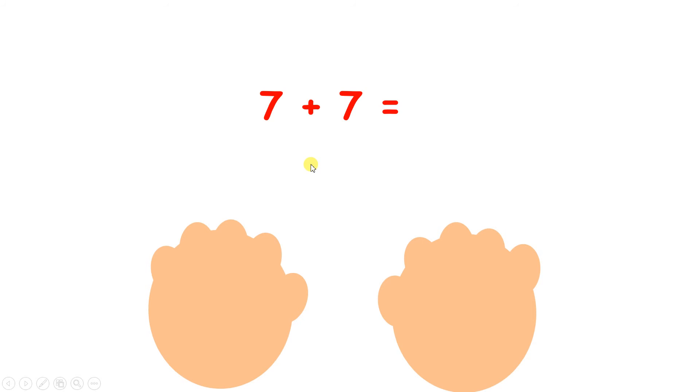So again really important we say 7 before we put any fingers up. And then we count on 8, 9, 10, 11, 12, 13, 14. And I'm going to stop at 14. Why am I going to stop at 14? Well you can see that I'm now holding up 7 fingers. So I've added 7 to get my answer of 14.